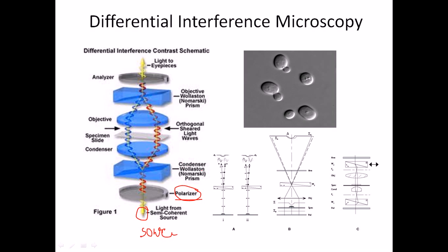After the polarizer, we have the condenser — but this is not a conventional condenser. It is called a Nomarski prism or Wollaston prism. This is a densely made glass structure that has an anisotropic layered composition with lateral divisions of varying density. This varying density gives the prism the characteristic ability to divide polarized light into two separate beams.